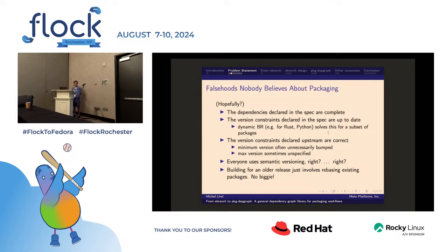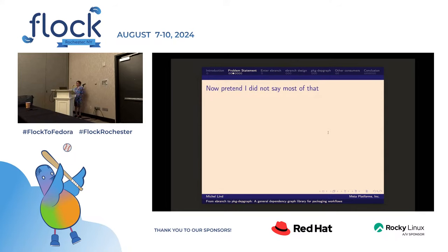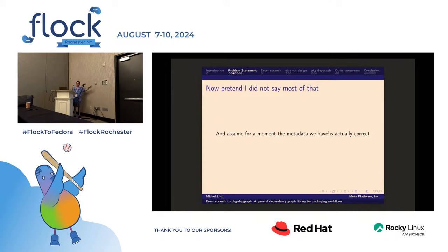Most relevant for eBranch and PKG DepGraph: you have Fedora, and every few years a new enterprise Linux comes along. You might be branching packages to a distribution that's a bit older, and it should be fine — it's just rebasing everything. Assume we have good metadata. What can we do to say: I have upstream software and I want to bring it into Fedora, or I have Fedora packages and I want to bring them into enterprise Linux?